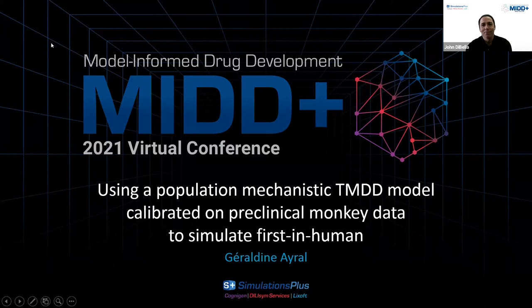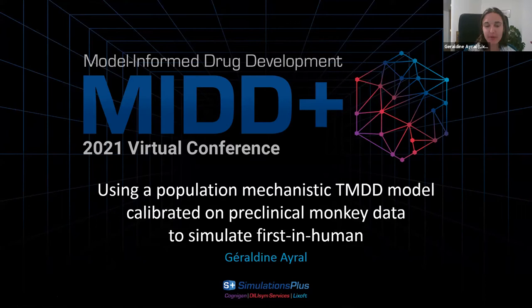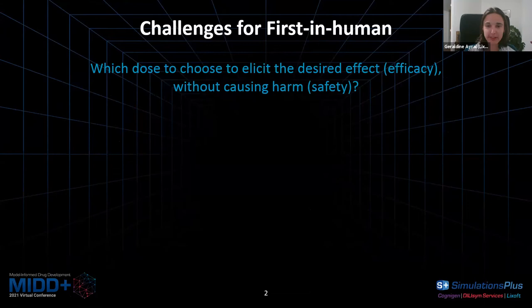Thanks for the introduction. What I'm going to show you today is an example of how to really use entirely your preclinical monkey data to plan first in human. The challenge when planning first in human is, of course, to choose a dose — you want it to be safe and still pretty close to a dose having an effect.